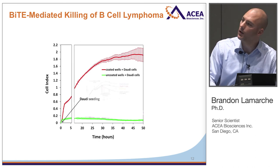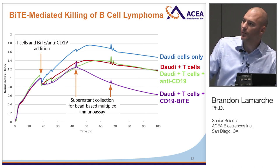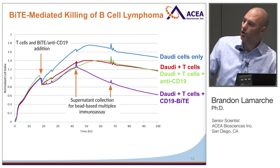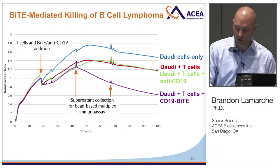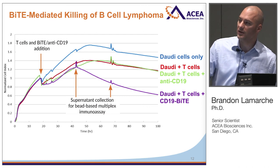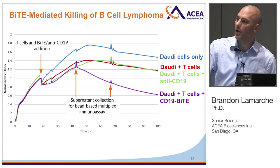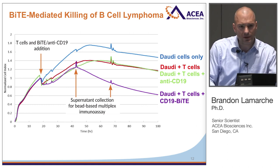Looking at the actual data: the blue trace shows Daudi cells by themselves reaching a plateau; in red, Daudi plus T cells shows some killing; in green, Daudi plus T cells in the presence of an anti-CD19 antibody — used as a control representing half of the BiTE molecule — shows it doesn't enhance killing at all. But in purple, when a legitimate BiTE molecule is present that can bind both the T cell and the target cell, there is increased cell killing.